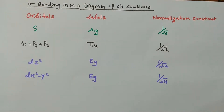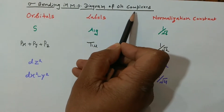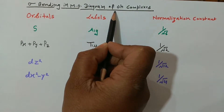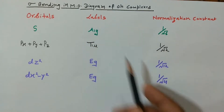Hello friends, welcome back to the Tetrahedron Chemistry Classes. In my last lecture on coordination chemistry, I started the ligand field theory and explained the formation of ligand group orbitals. Today I am going to explain a very important aspect of ligand field theory: sigma bonding in octahedral complexes. I'll draw the molecular orbital diagram for the octahedral complex and explain how the sigma bond forms.